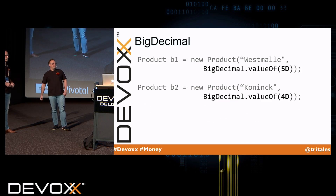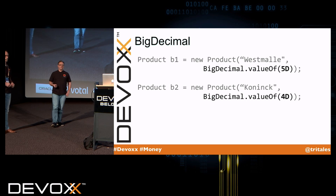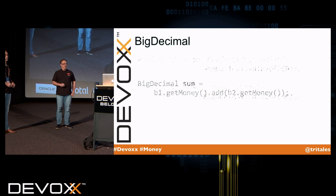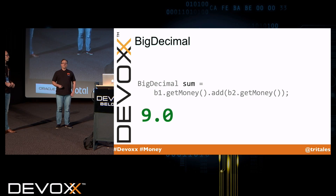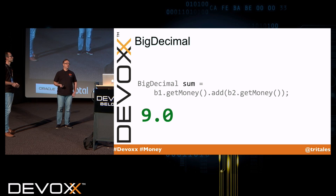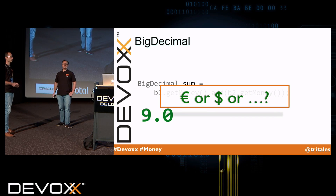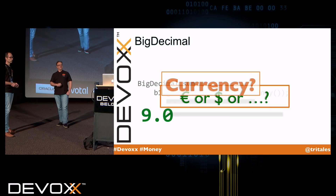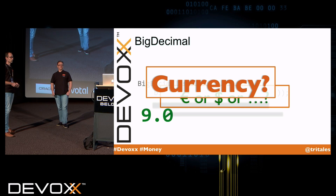So a better way would probably be to use BigDecimals. So let's rewrite the example, and now when a co-worker adds up the values, he gets a value that's really easy to interpret. However, there's still one thing missing — are we talking about 9 euros or 9 dollars? So what's missing is currency.